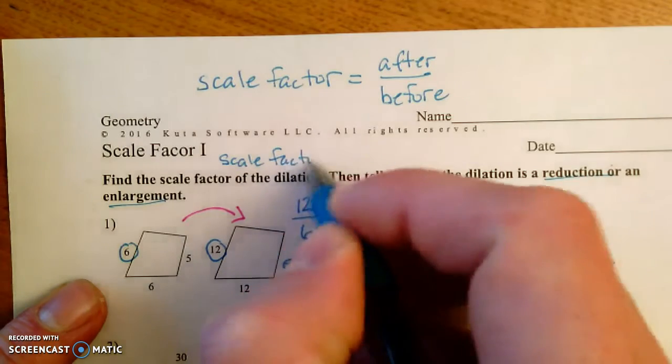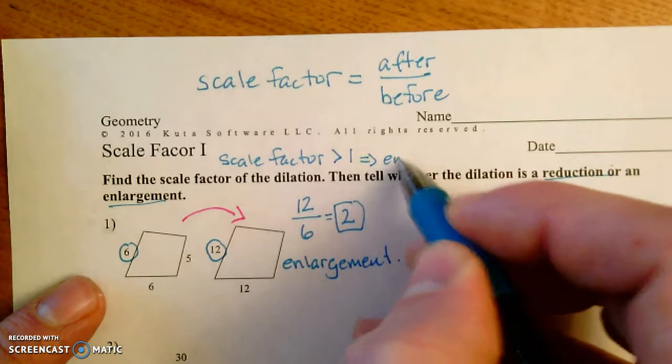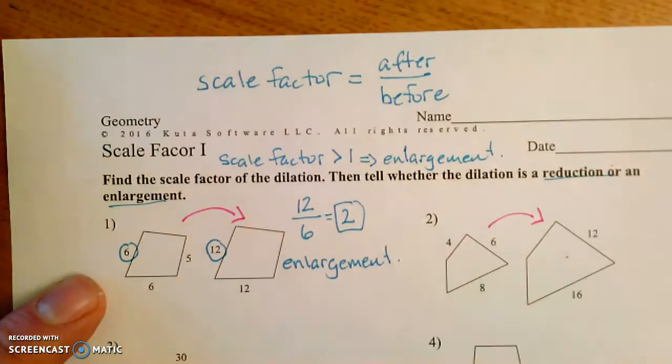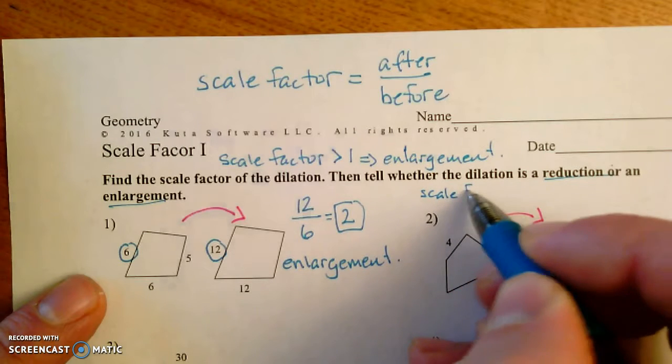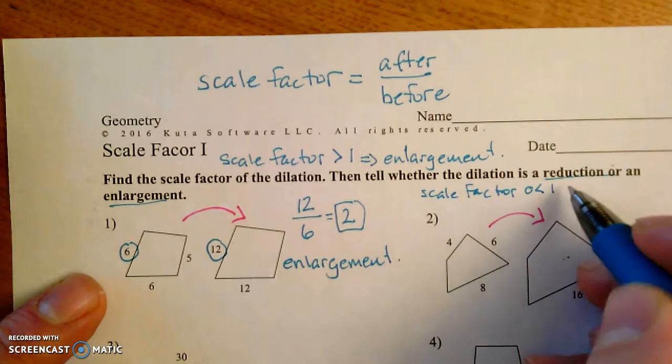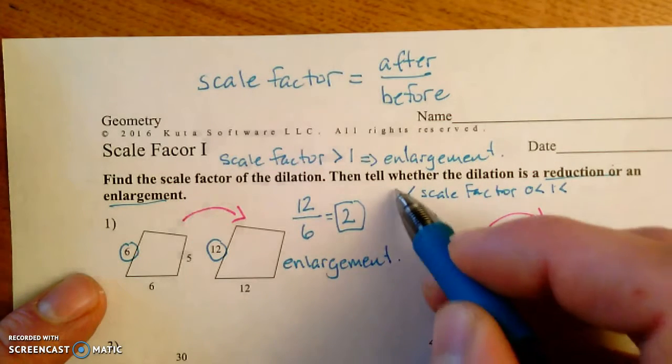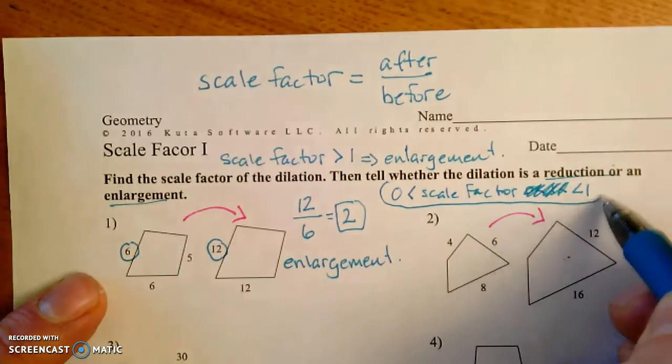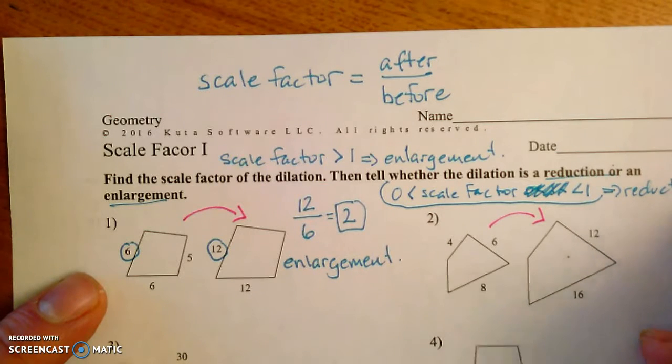Scale factor greater than 1 is an enlargement, whereas scale factor greater than 0 and less than 1 gives us a reduction.